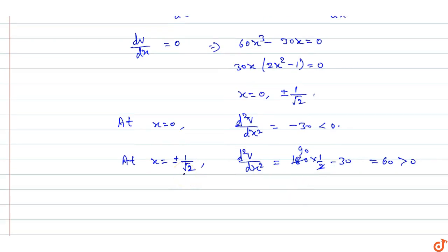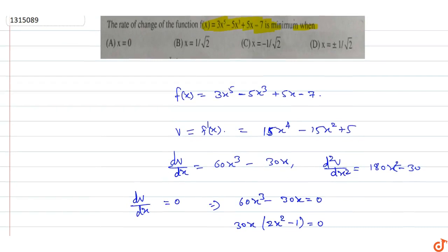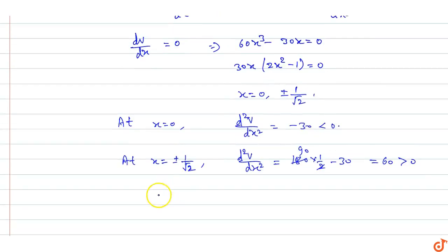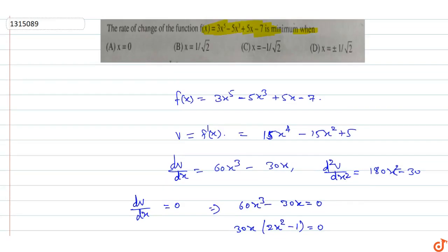At x = ±1/√2, d²v/dx² = 60, which is greater than 0, meaning dv/dx is minimum. So the rate of change of f(x) is minimum at x = ±1/√2. Therefore option D is the correct answer.